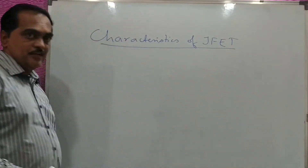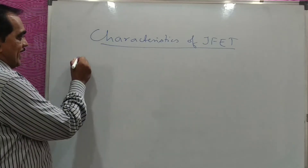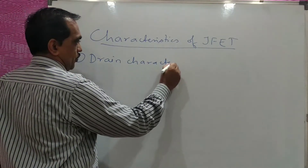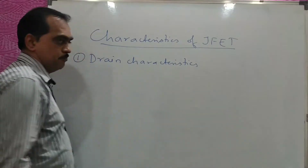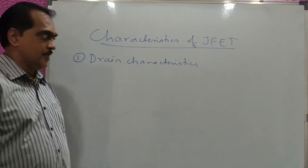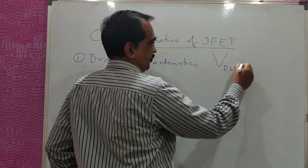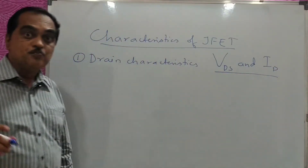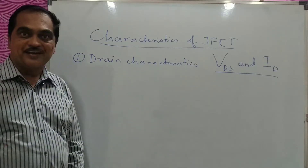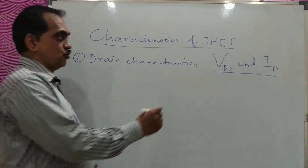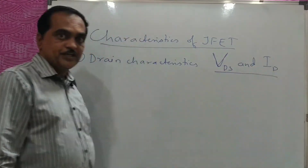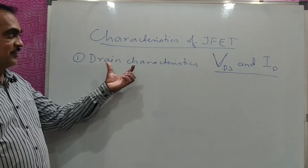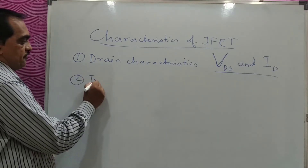JFET exhibits two types of characteristics. The first is called Drain Characteristics, which is a graph between output voltage and output current — specifically the voltage between drain and source (VDS) and the drain current ID — for a constant input voltage. This is like output characteristics, where you vary the output voltage and note the output current for a constant input voltage.